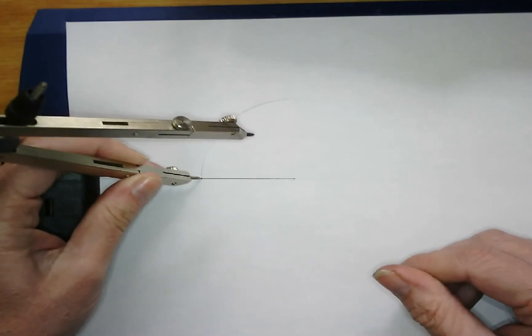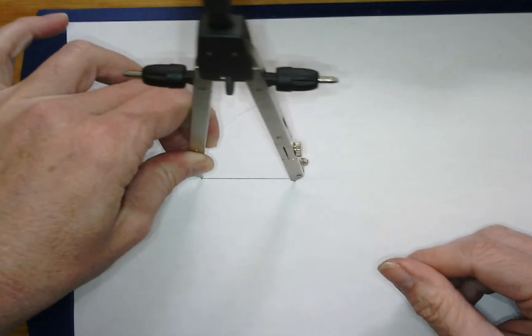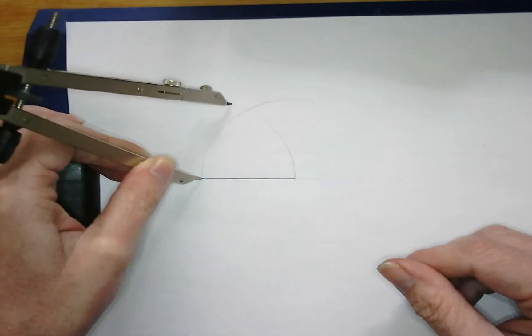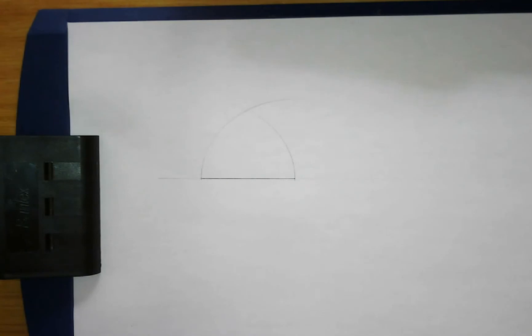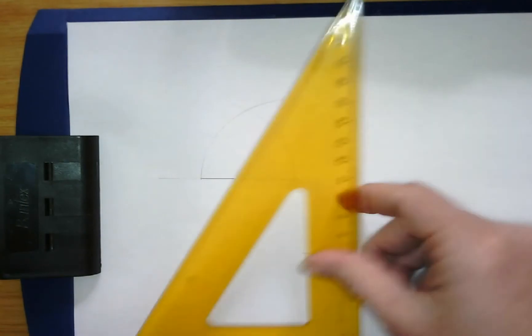Lift your compass, go across to this side, scribe your next arc. And there you have the construction for a triangle.